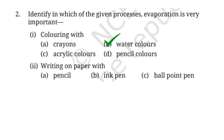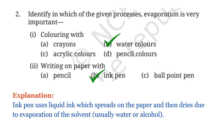Next: writing on paper with A) pencil, B) ink pen, and C) ballpoint pen. Ink pen uses liquid ink which spreads on the paper and then dries due to evaporation of the solvent, usually water or alcohol. So option B, ink pen, is the correct answer.